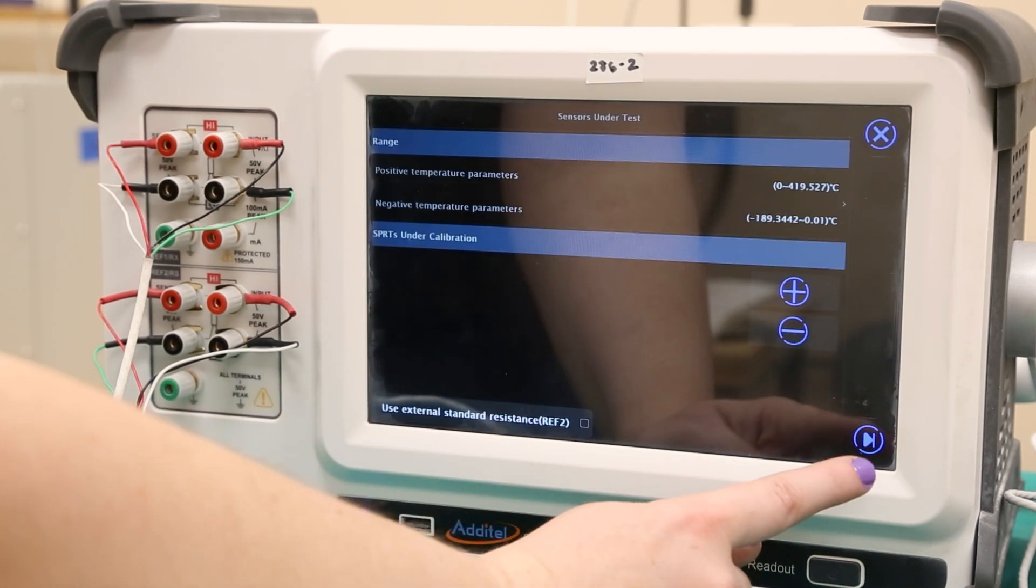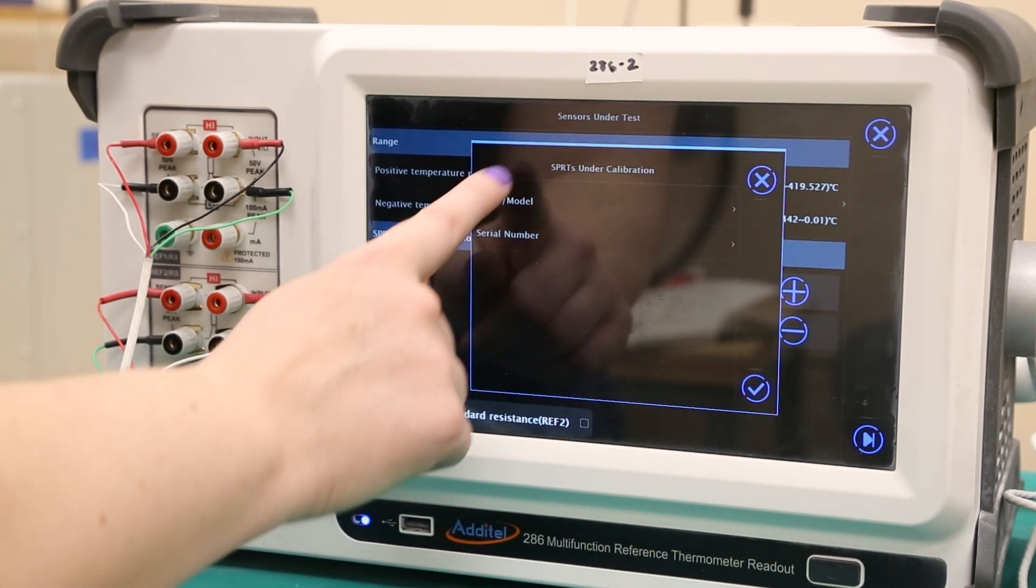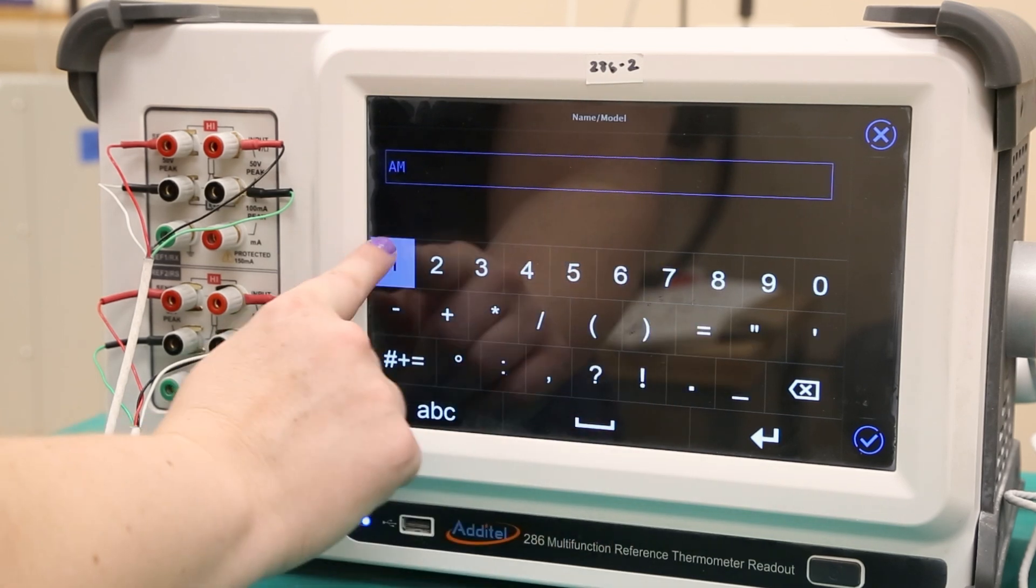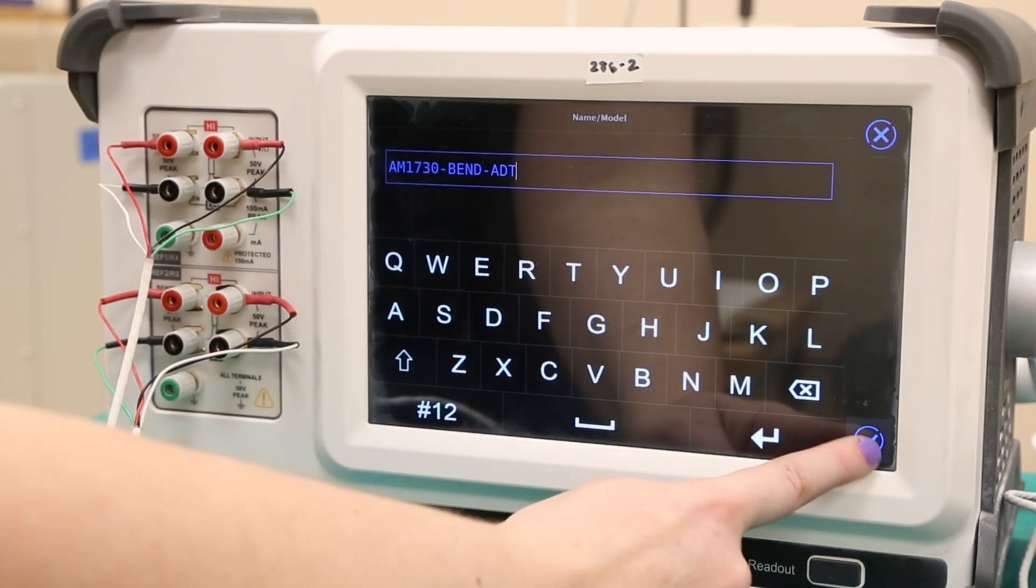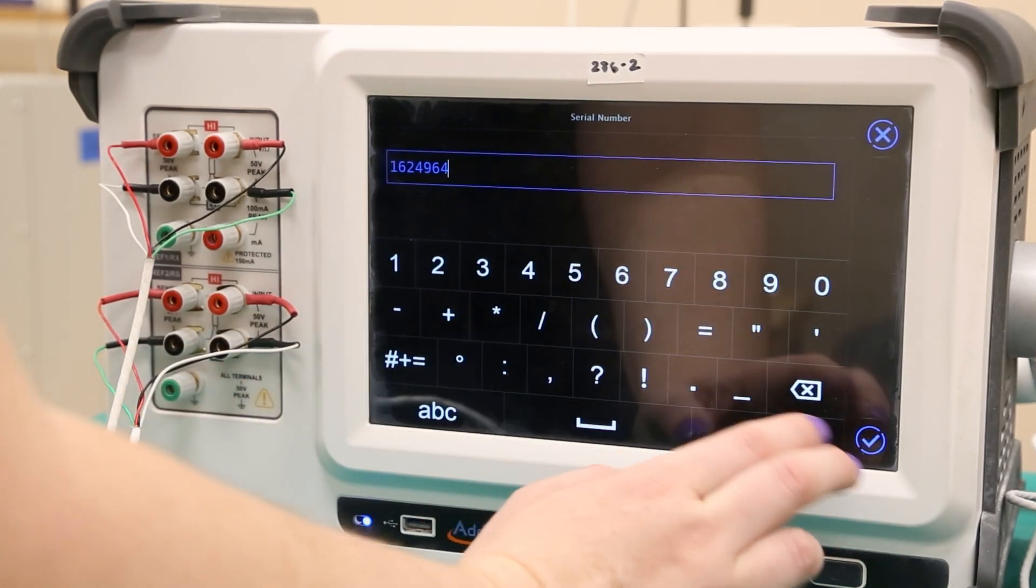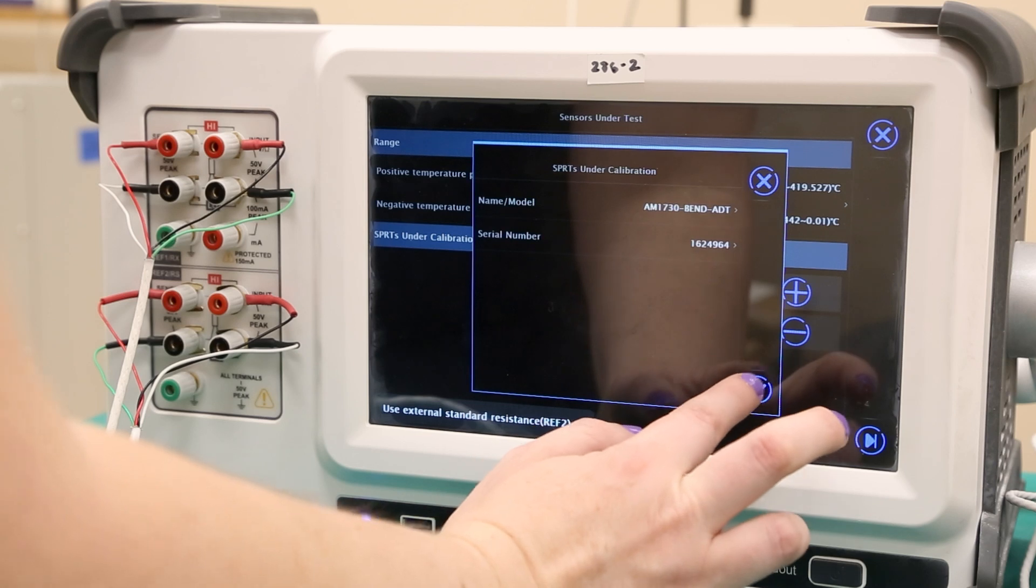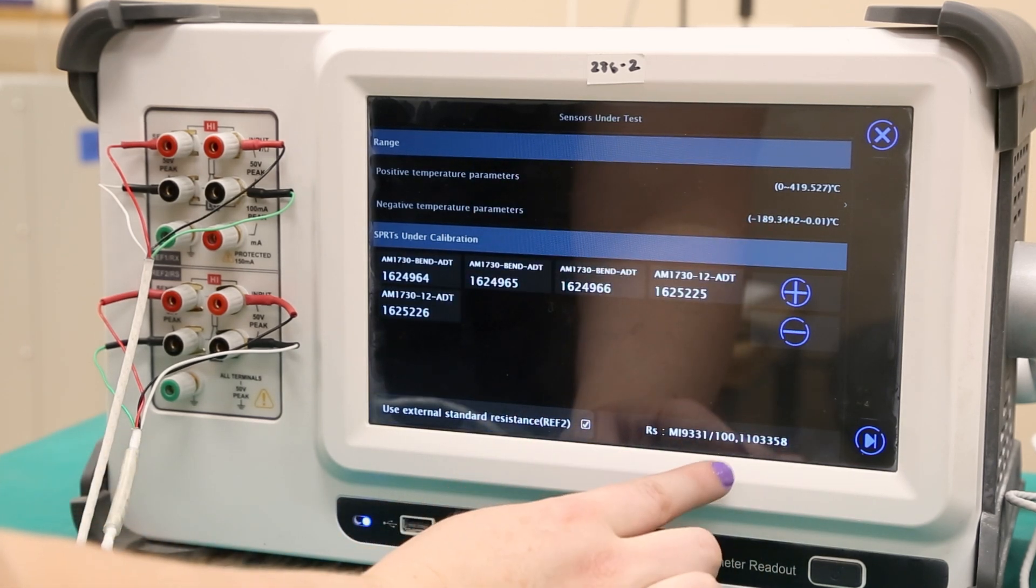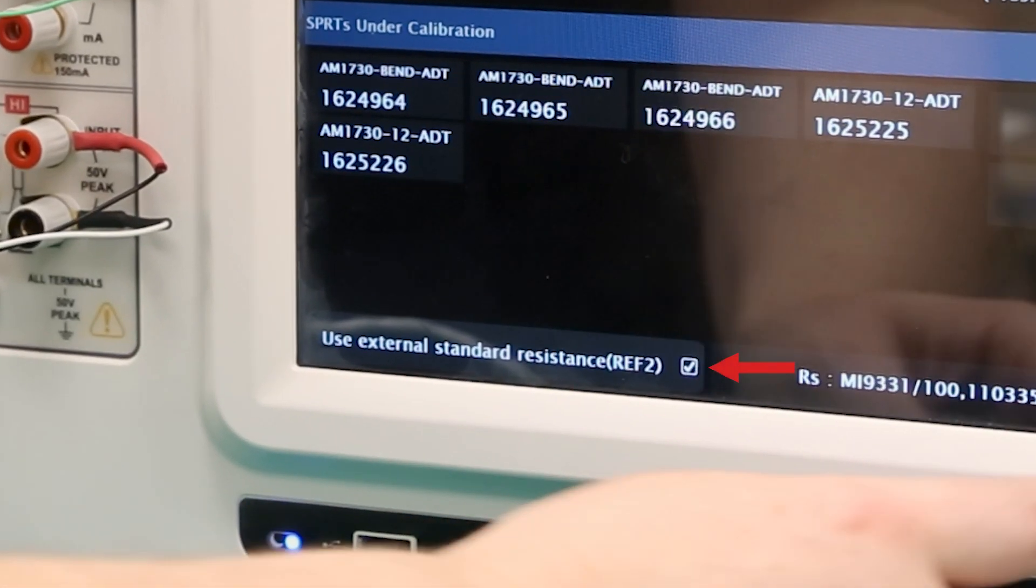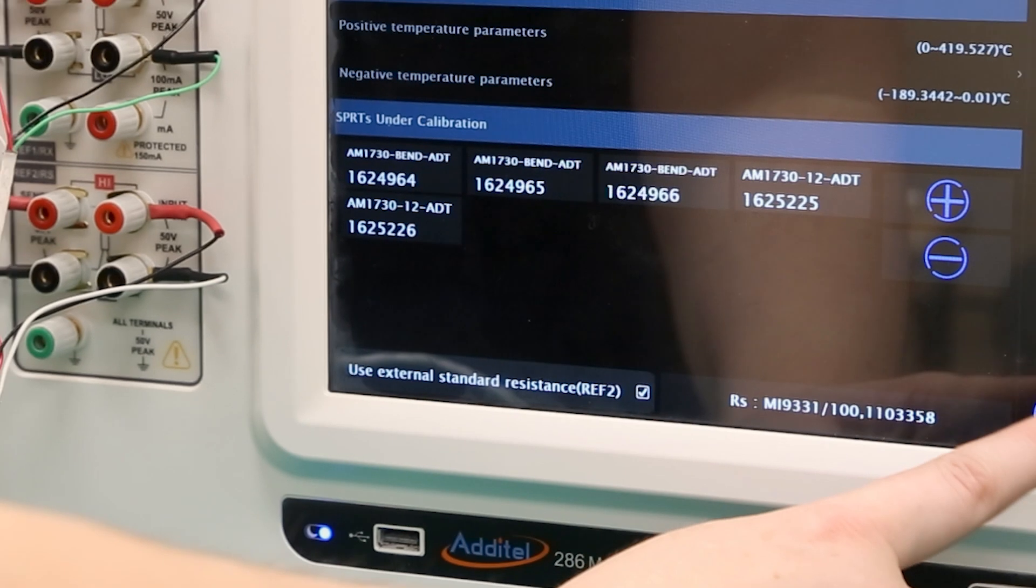Next, we will add the five SPRTs that we will be calibrating by pressing the plus button. The name and serial number on these probes should be recorded to ensure accurate traceability. Once all probes have been entered, we will check the use external standard resistance option before pressing next.